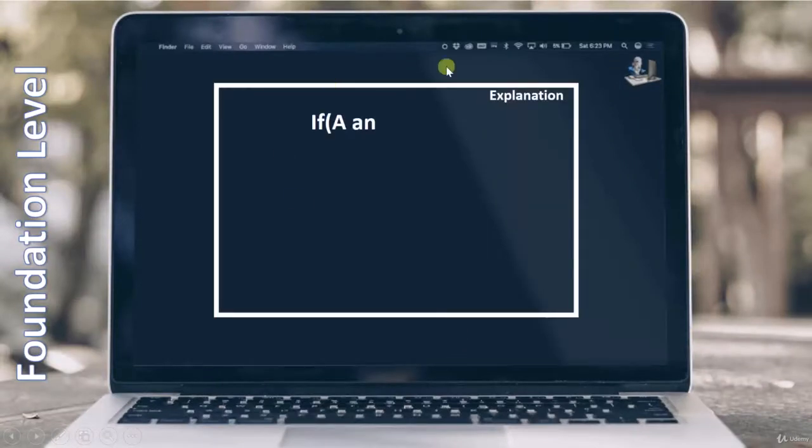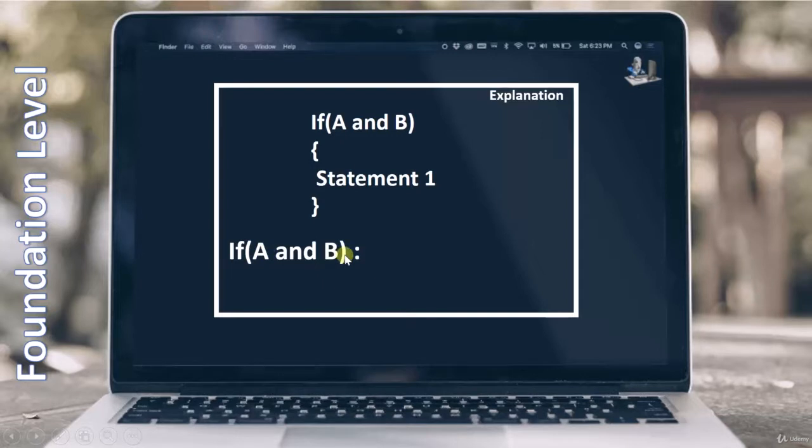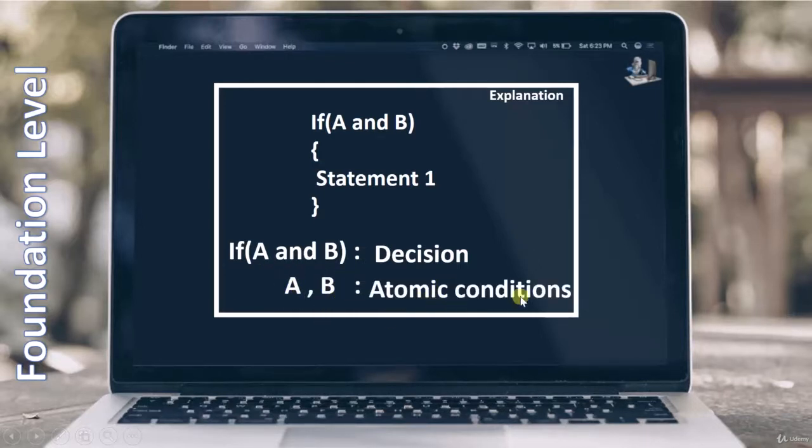Let's start with the decision itself. This is the same example which we have seen in condition testing, where we have seen if A and B is a decision. We have also seen that A and B as individual entities are called atomic conditions.